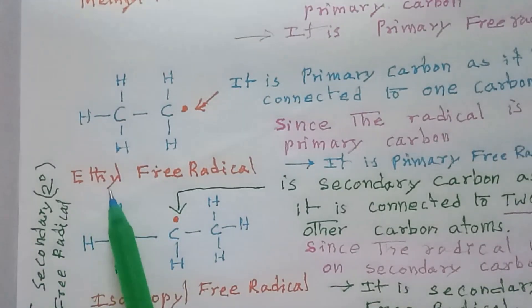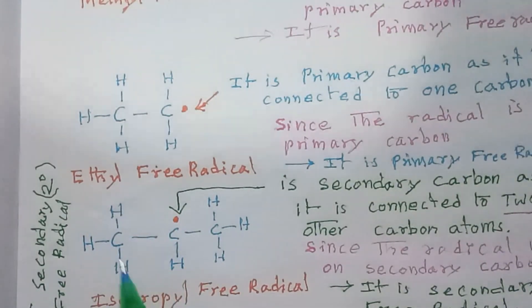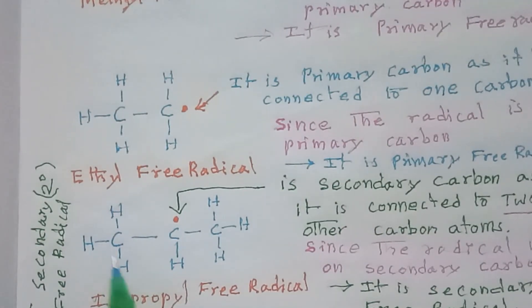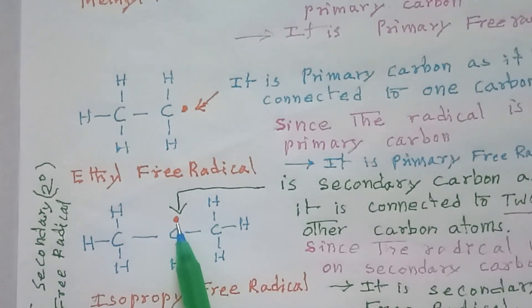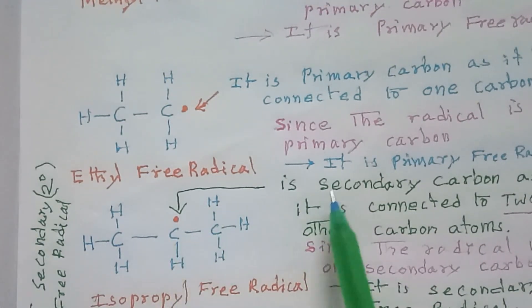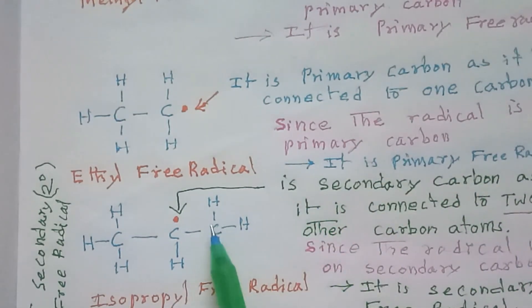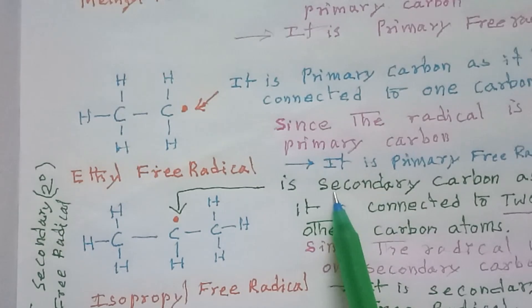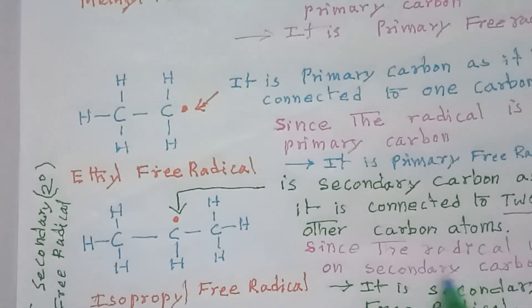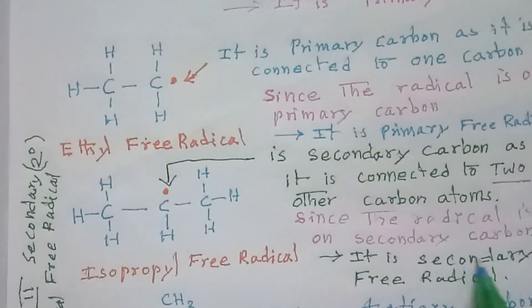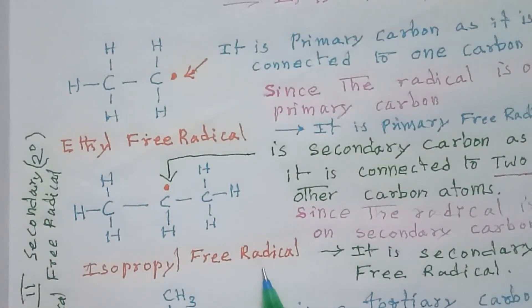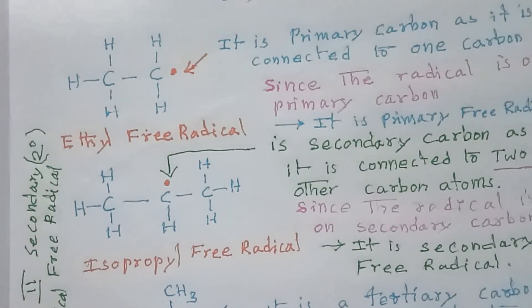Now let us see secondary free radicals. This is the isopropyl free radical. As you know, propane has three carbon atoms. The radical is present on the middle carbon, so it is called the isopropyl free radical. This middle carbon is connected to two other carbons, making it a secondary carbon. Since the radical is present on a secondary carbon, it is called a secondary free radical.